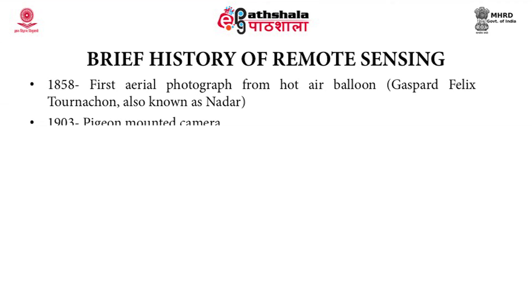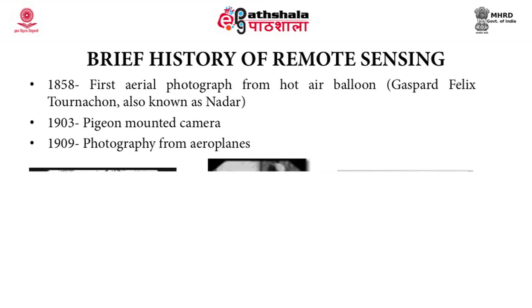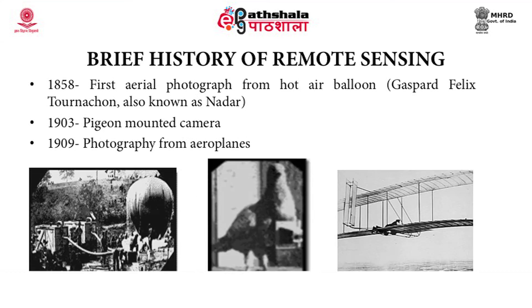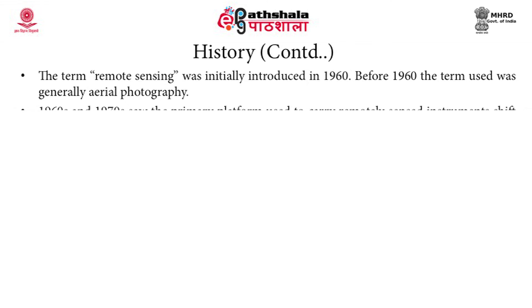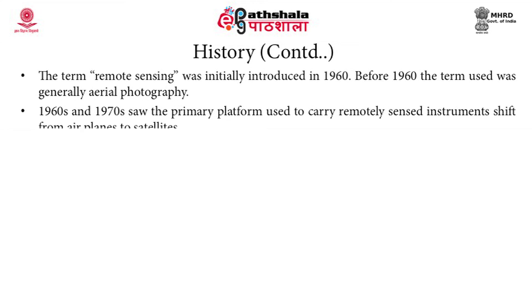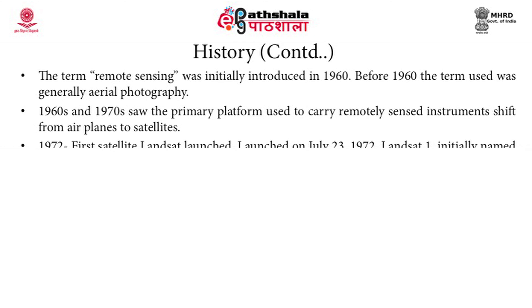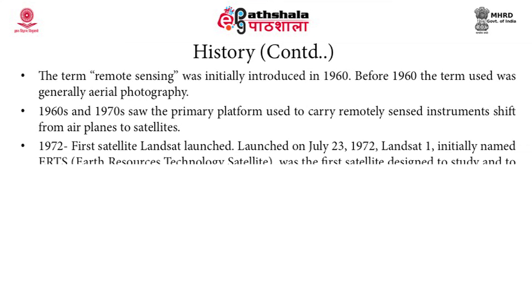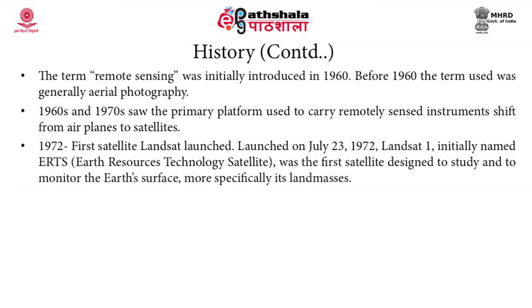The first aerial photograph from a hot air balloon was carried out in 1858 by Gaspard Felix Tournachon, also known as Nadar. In 1903, pigeon-mounted cameras were used, and photography from airplanes was carried out in 1909. The term remote sensing was initially introduced in 1960; before that, the term was generally used for aerial photography. In the 1960s and 70s, the primary platform used to carry remotely sensed instruments shifted from aerial planes to satellites — from airborne to spaceborne. In 1972, the first Landsat satellite was launched on July 23, 1972. It was initially named the Earth Resources Technology Satellite and was the first satellite designed to study and monitor the Earth's surface features, more specifically its land masses.